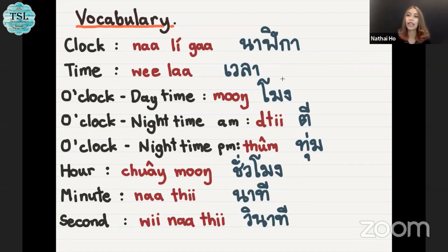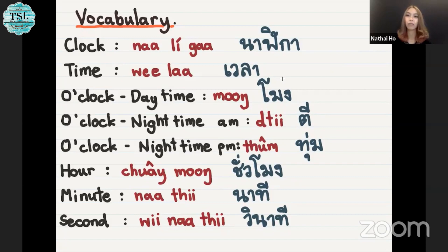O'clock nighttime as AM, we say ti, ti. O'clock nighttime as PM, we will say thum, thum.